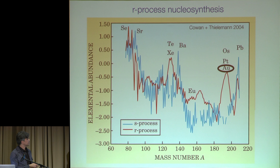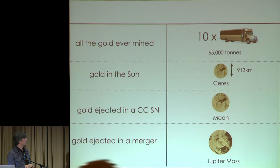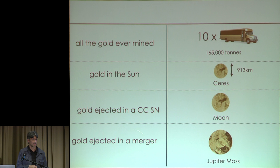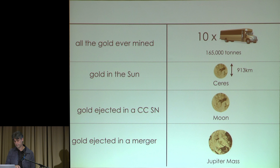To give you a sense of scale with my favorite element, gold: the gold in the sun has the mass of the largest asteroid in the solar system. A gold mass ejected in a core-collapse supernova has the mass of the moon. Gold ejected in a merger has the mass of Jupiter — as an order of magnitude to remember. That means one of these merger events can basically supply the gold content of about 10 million stars.